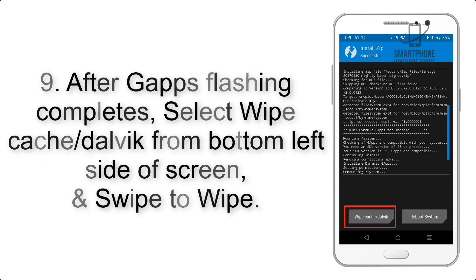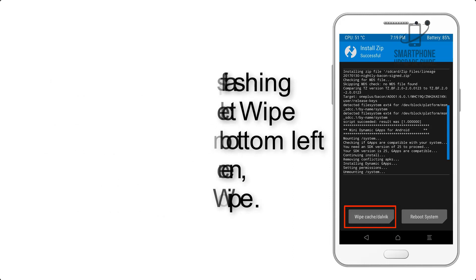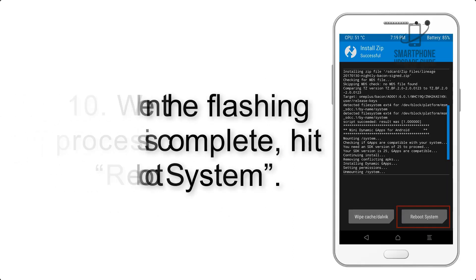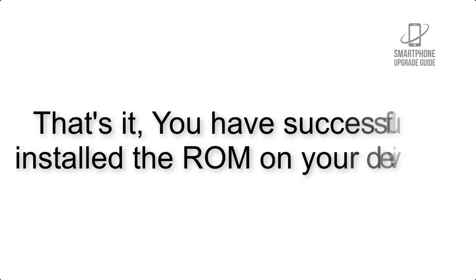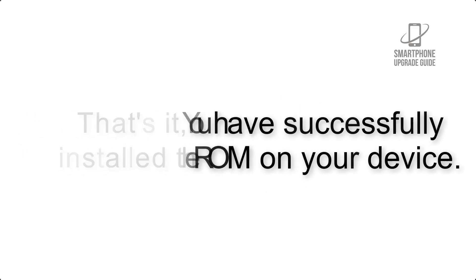Step 9: After GApps flashing completes, select Wipe Cache and Dalvik from the bottom left side of the screen and swipe to wipe. Step 10: When the flashing process is complete, hit Reboot System. That's it — you have successfully installed the ROM on your device.